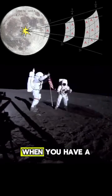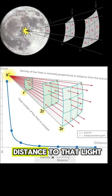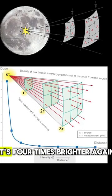The inverse square law of light. When you have a light upright at a certain brightness and you half the distance to that light, it's four times brighter. Then you half that distance, it's four times brighter again.